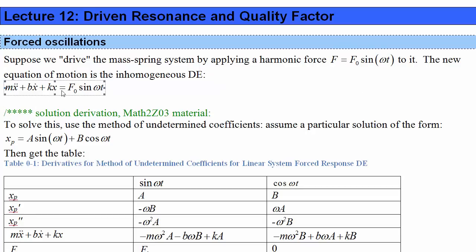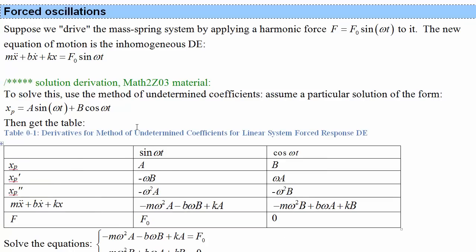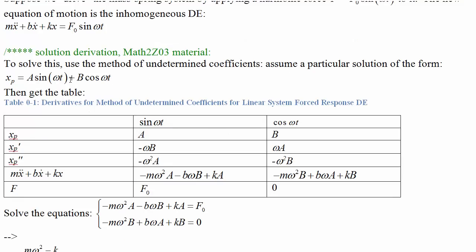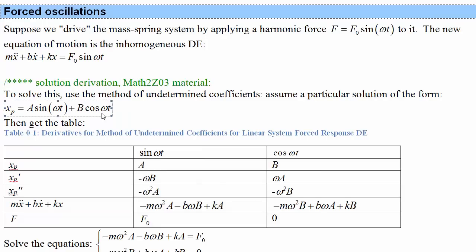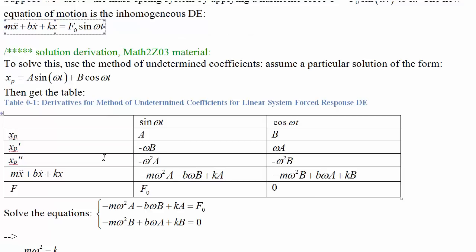To derive the solution to this now inhomogeneous differential equation, if you're in Math 2Z03, then you can use the method of undetermined coefficients or variation of parameters. I'm going to show you the method of undetermined coefficients by assuming a particular solution of this form. This should be valid as long as omega sine omega t and cos omega t are not in the homogeneous solution, and they're not. Plus, they may not necessarily be the same frequency either.